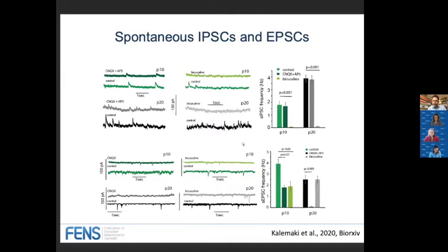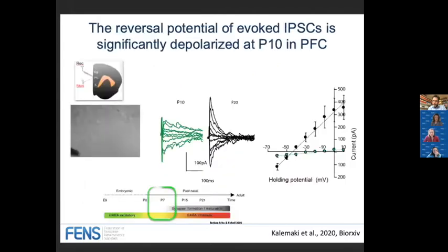At P20, bicuculline did not affect the spontaneous EPSCs; however, CNQX and AP5 significantly blocked them. The interesting data is at P10 in the PFC, where spontaneous EPSCs were blocked by both CNQX — an AMPA receptor antagonist — and bicuculline — a GABA receptor antagonist. These data indicate that GABAergic receptor function is still depolarizing at P10. In the visual cortex, the switch occurs at the end of the first postnatal week, so at P10 it should already be hyperpolarizing — demonstrating a delayed switch in the PFC.